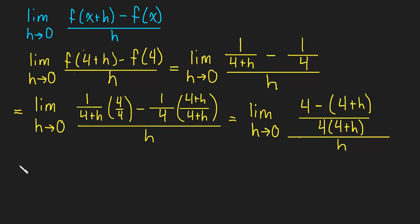I'm just going to switch colors arbitrarily here. So this will be the limit as h approaches 0. These two 4's will cancel. So we'll be left with h divided by 4 times 4 plus h, all divided by h.